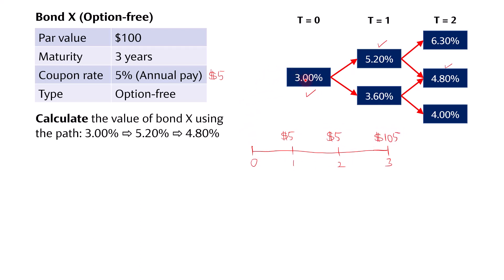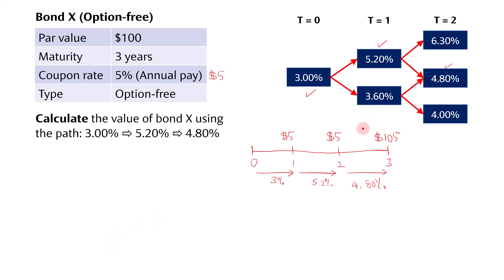For the interest rate path on the timeline, we have 3% for the 1-year spot rate, 5.2% for the 1-year forward rate in 1 year's time, and 4.8% for the 1-year forward rate in 2 years' time. What we need to do now is calculate the present value of all these cash flows back to time 0.